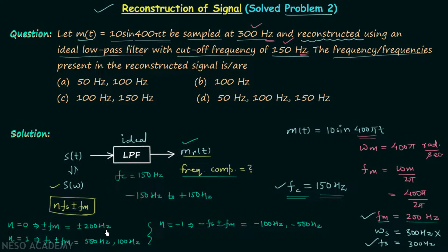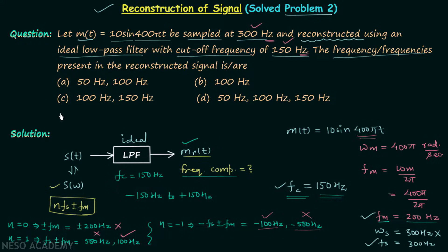±200 Hz is outside the ±150 Hz range, so it will not appear at the output. 500 Hz will not pass, but 100 Hz will pass — it is inside the range. Similarly, −100 Hz will pass and −500 Hz will not. Negative frequencies are not listed in the options since they have no practical importance, but 100 Hz is present in the reconstructed signal.